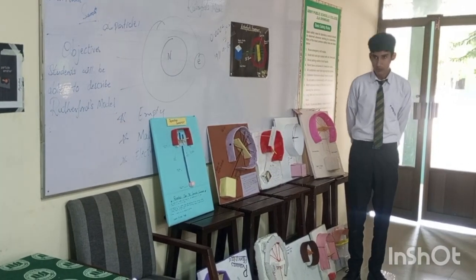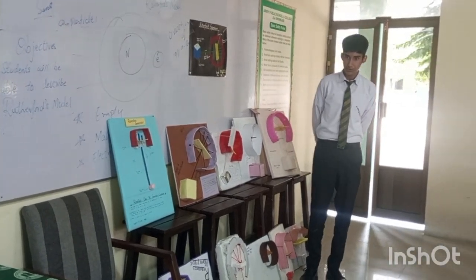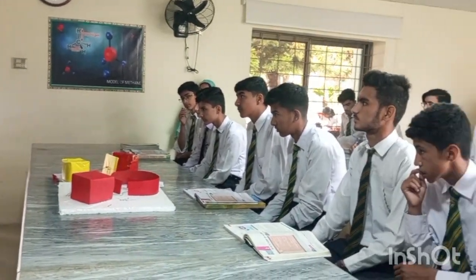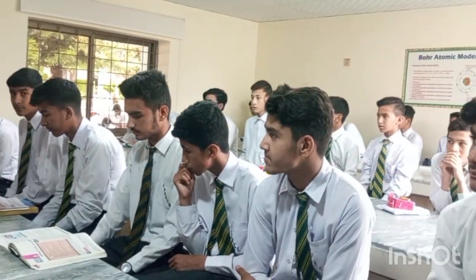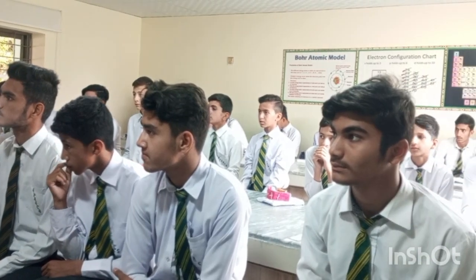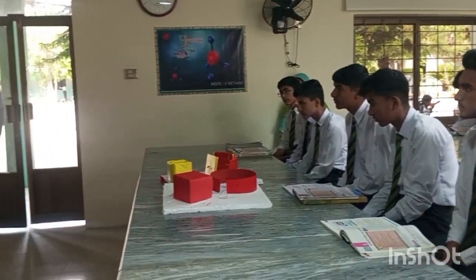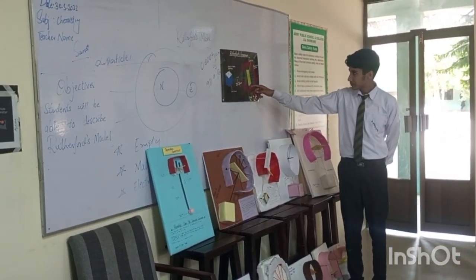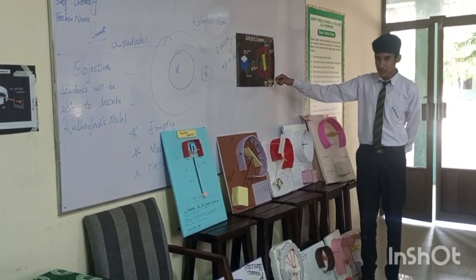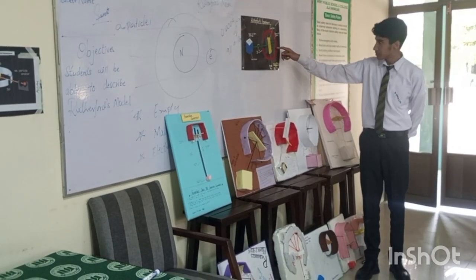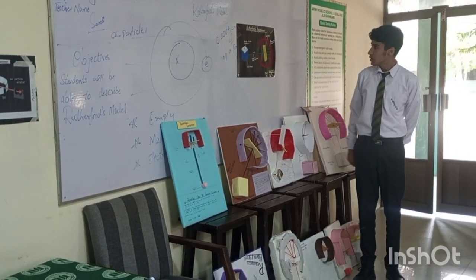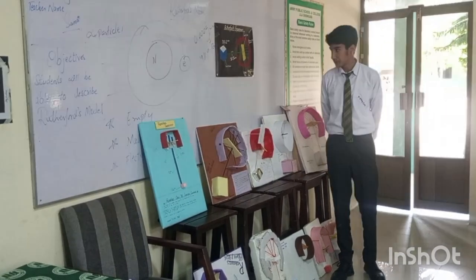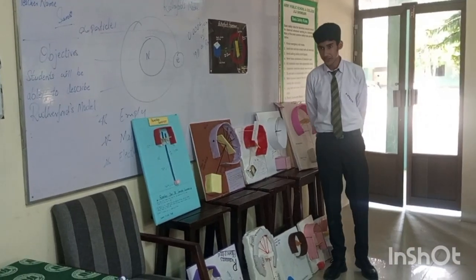Who was Rutherford? Rutherford was a scientist who did an experiment to know about the structure of protons and neutrons in an atom. He used a thin gold foil about 0.0004 cm in thickness and bombarded it with alpha particles. Most particles passed straight through; some were deflected, and one in a million were deflected at an angle greater than 90 degrees.